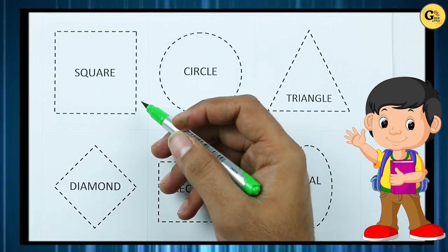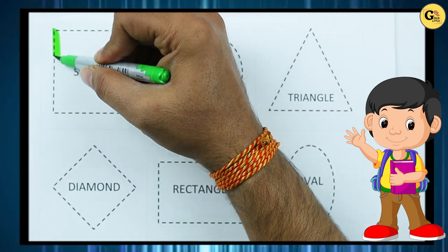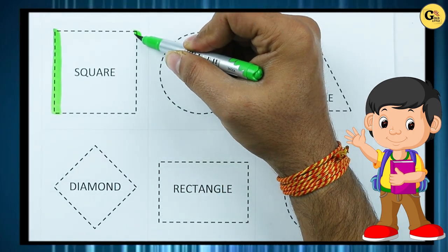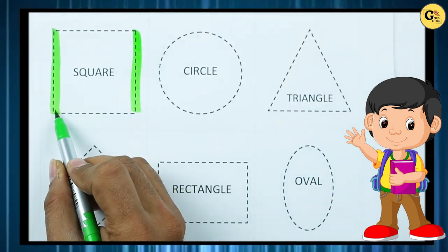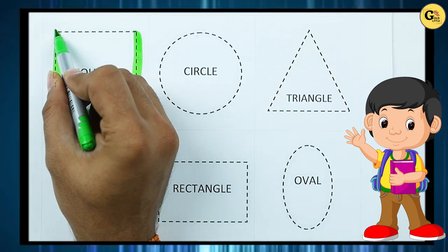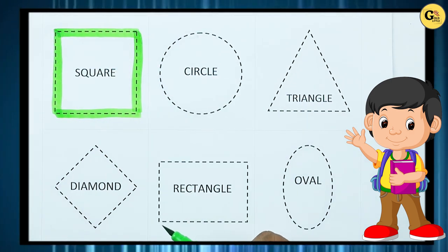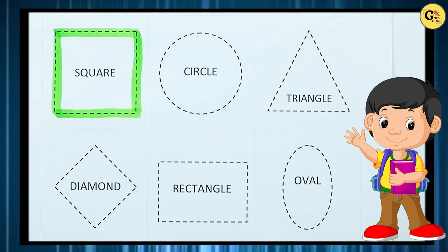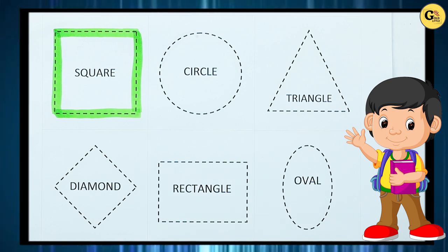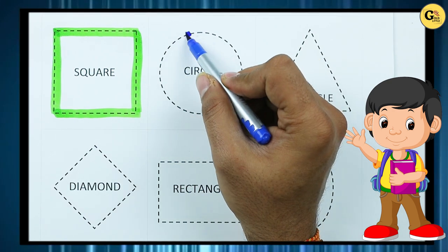It's a square. One line, two line, three line, four line, two sleeping lines, two standing lines. It's called square with green color.